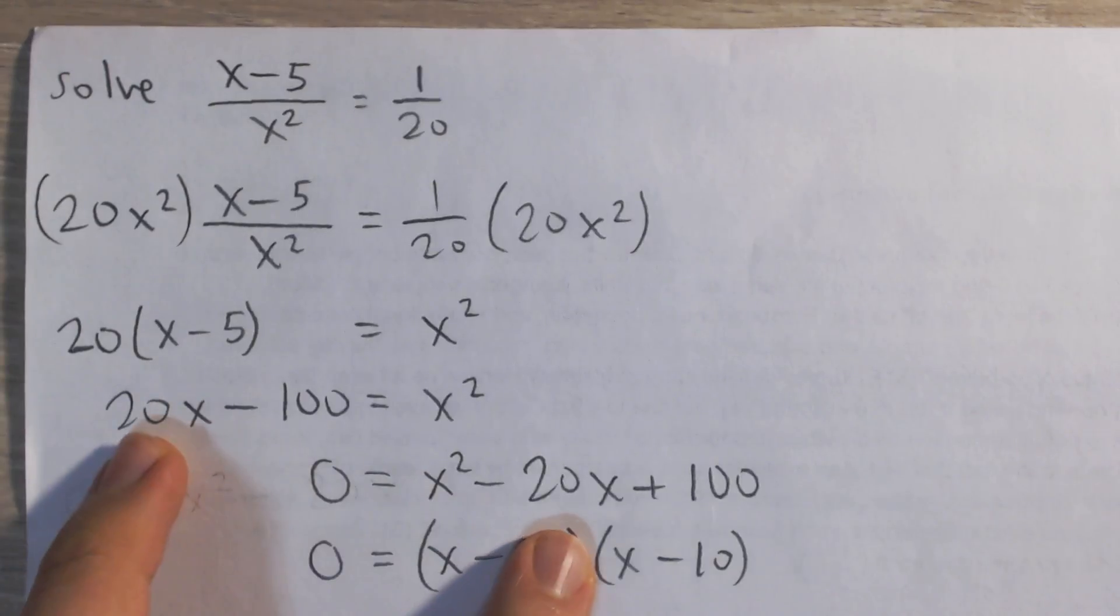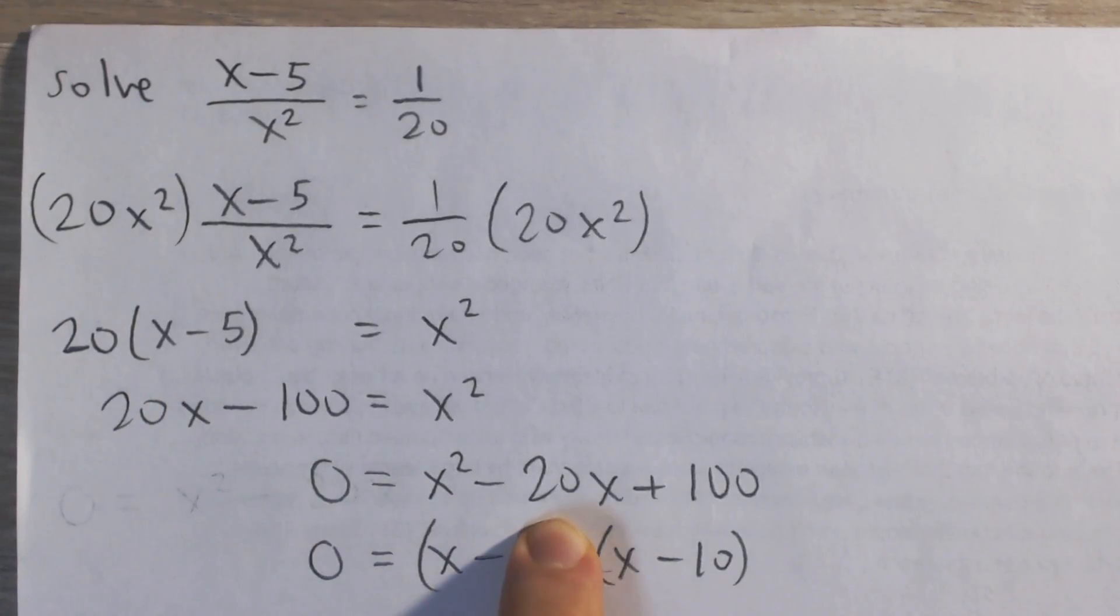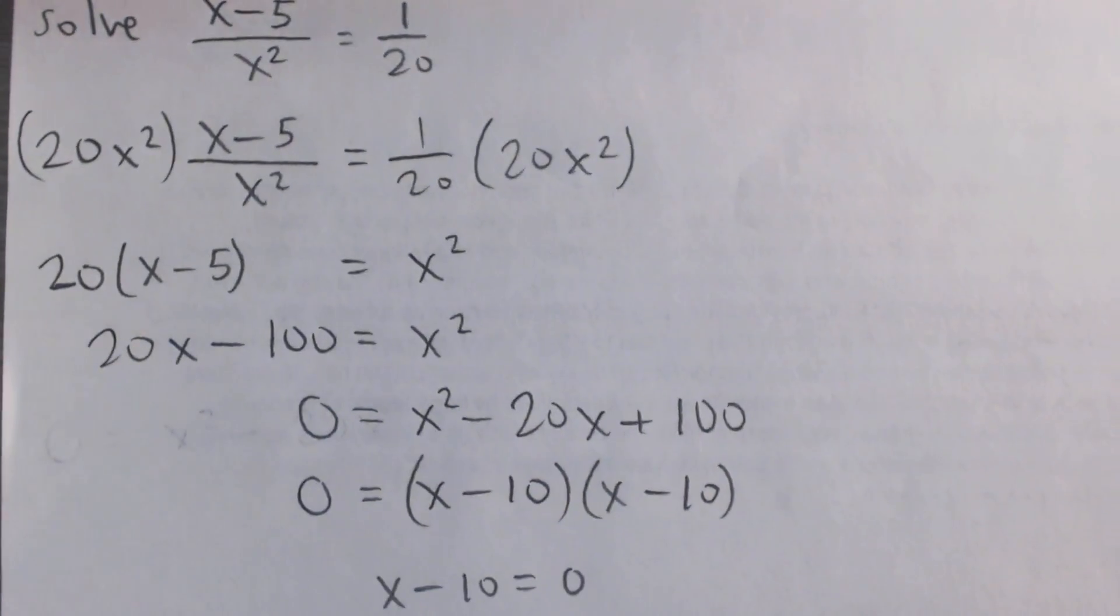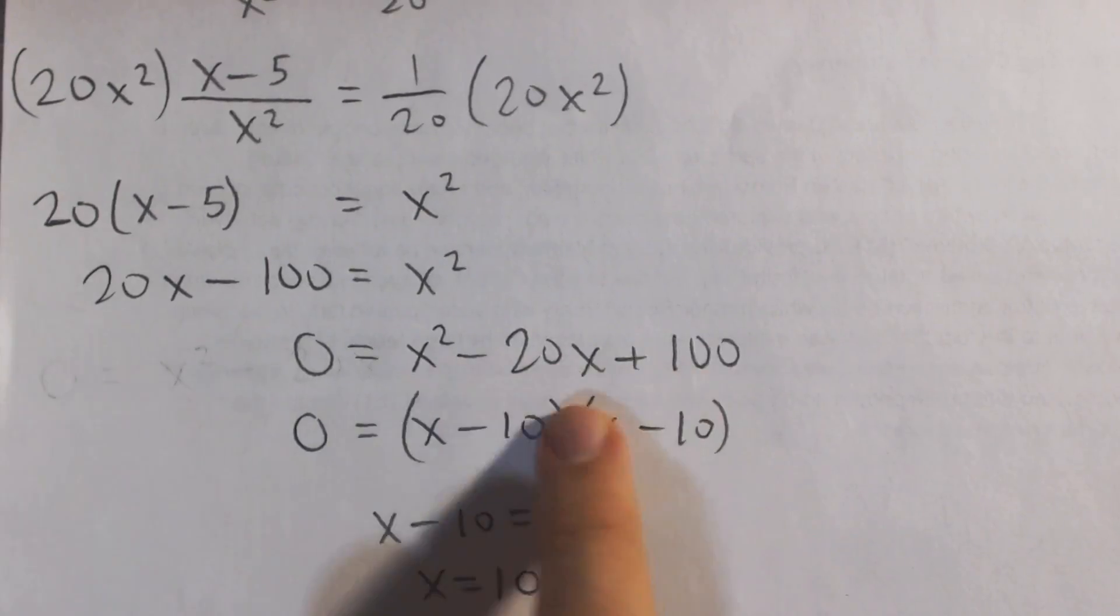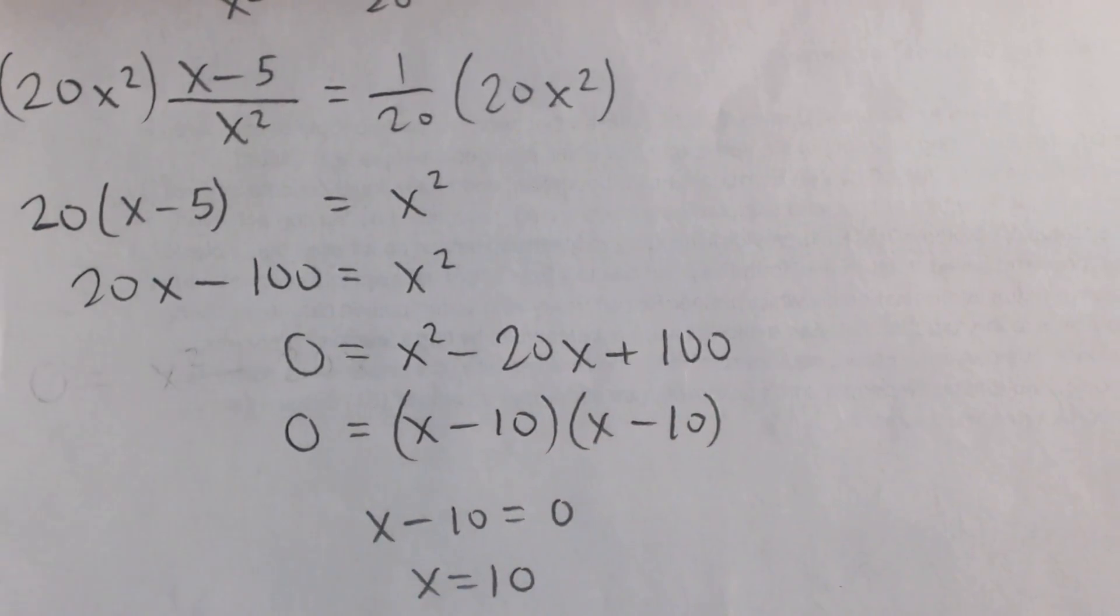So I'm going to subtract 20x from both sides to make negative 20x on the right, and then add 100 to both sides to get 100 on the right. And now you can see here, we can actually factor this equation, or factor this polynomial here into x minus 10 times x minus 10, x minus 10 squared.